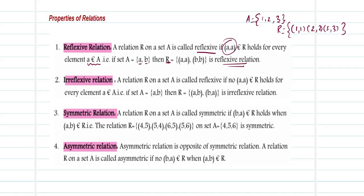Next, irreflexive relation. A relation R on a set A is called irreflexive if no pair (A, A) is part of the relation. For the set {A, B}, I have (A, B) and (B, A) alone, but I do not have the elements (A, A) or (B, B) as part of R. Therefore I call this R to be irreflexive — if it does not contain any element of the nature (A, A), then you call it irreflexive.